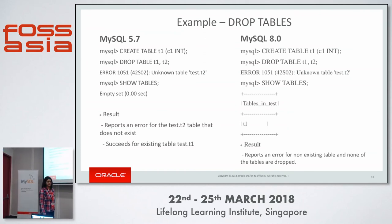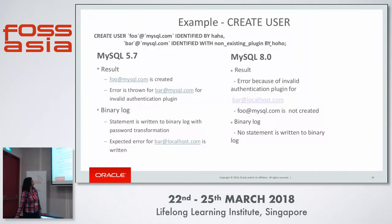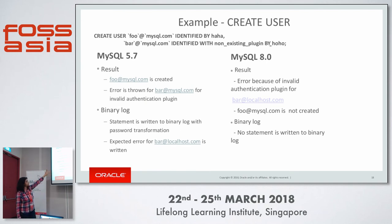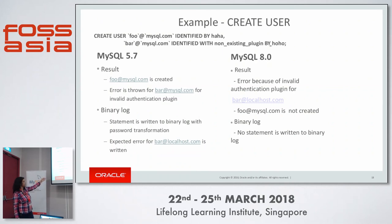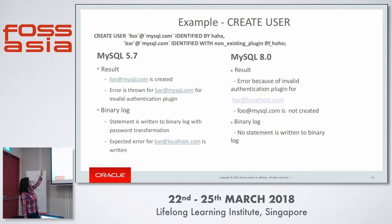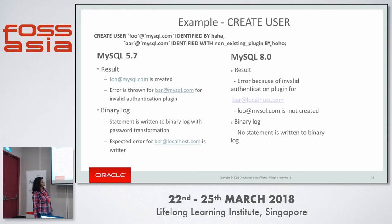Another example is CREATE USER. If we try to create two users in a single statement — the first with a valid authentication plugin and the second with a non-existing plugin — in 5.7 the first user gets created and it errors out for the second. The binary log writes a statement to replicate creation of user foo and an expected error for user bar. In 8.0, none of the users get created and it gives an error message about invalid authentication. Nothing is written to the binary log, so there is nothing for replication to handle.